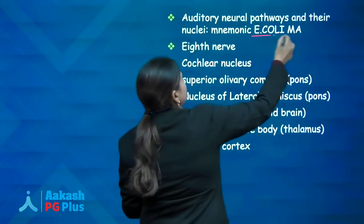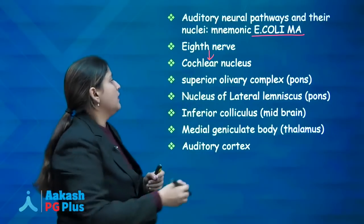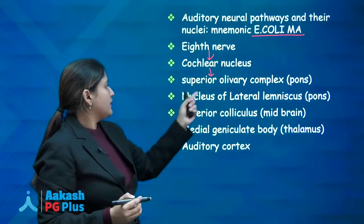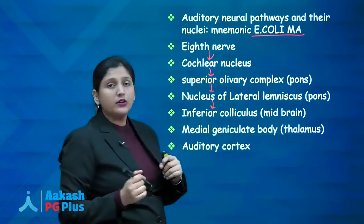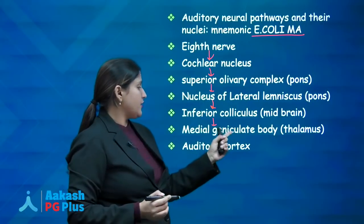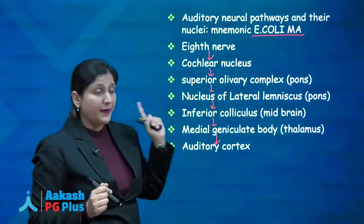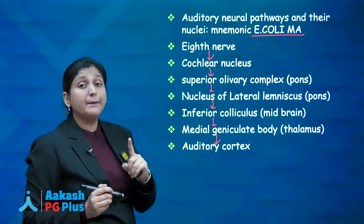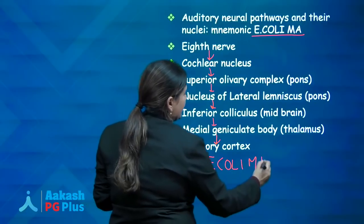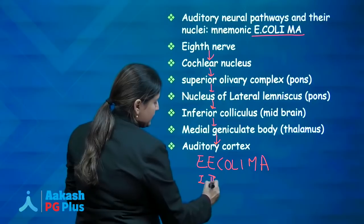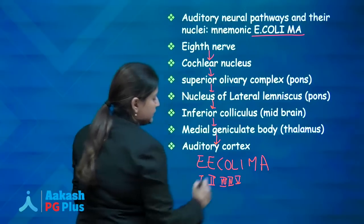The mnemonic E-COLIMA stands for the 8th nerve pathway: 8th nerve → cochlear nucleus → superior olivary complex → nucleus of lateral lemniscus → inferior colliculus → medial geniculate body → auditory cortex. If asked about BERA waves, the mnemonic is EE-COLIMA, where waves are arranged according to this same sequence.